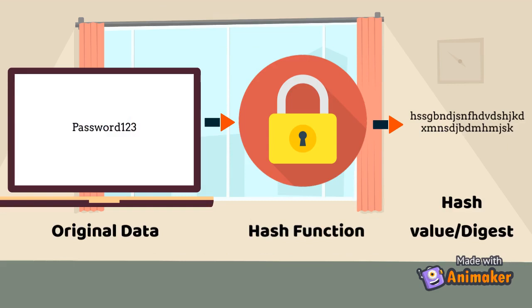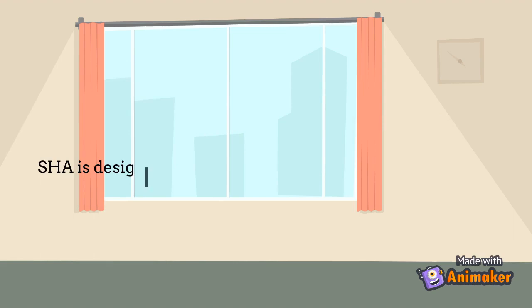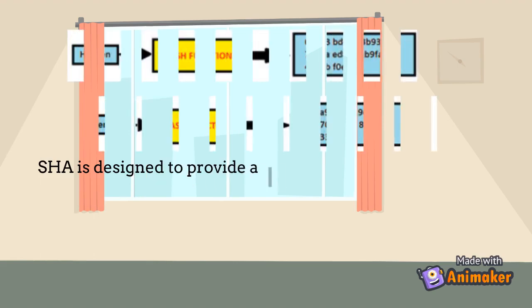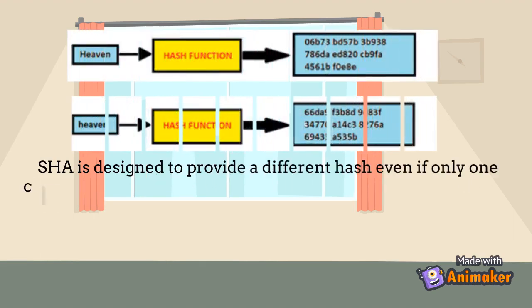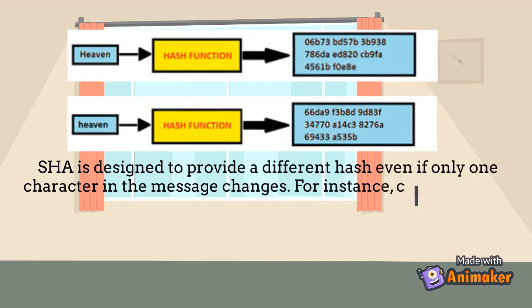The hash function will scramble the data so nobody can understand it. The 160-bit digest is the text that has been hashed. See the illustration above to see how the SHA algorithm functions. SHA is designed to provide a different hash even if only one character in the message changes.